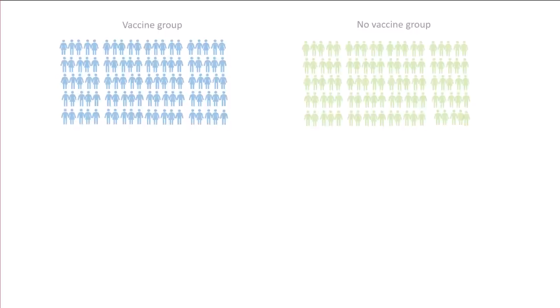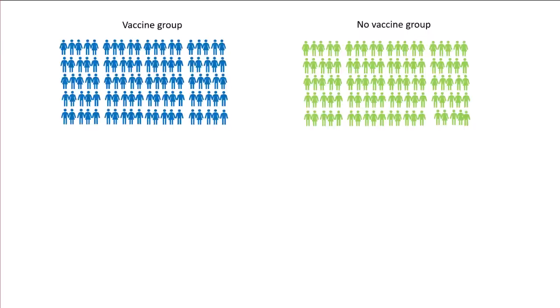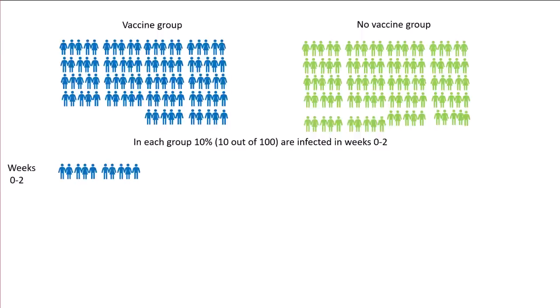Here are 100 people we observe who get the vaccine and 100 who don't. We know that in each group 10% — that's 10 out of 100 — are going to be infected in the first two weeks. In the vaccine group, 10 out of 100 are going to be infected, and in the no-vaccine group, 10 out of 100 are going to be infected, because it's a placebo — it doesn't make any difference.